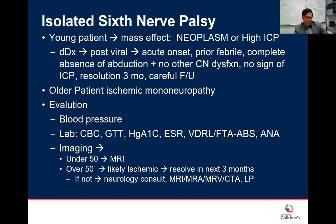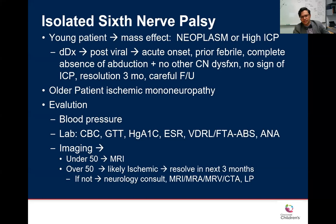Check labs: CBC, hemoglobin A1C. Don't forget to check for giant cell arteritis with ESR and CRP. If there's concern from their history, check for syphilis. Workup for autoimmune diseases if indicated. For age under 50, get an MRI to determine the cause — especially if not trauma-related. Over age 50 with strong vasculopathic history, it's likely ischemic. Any of these mononeuropathies should improve — after three months you should see improvement; at six months they should be significantly better.